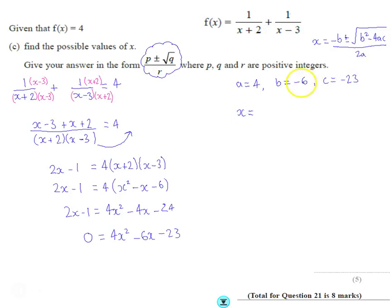So all I've got to do is substitute these numbers into this expression here. So x equals minus b, well this is already a minus, and that becomes plus 6. Plus or minus the square root of b squared, which is going to be 36.